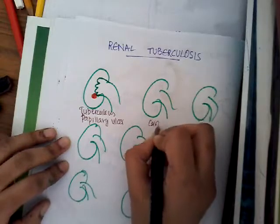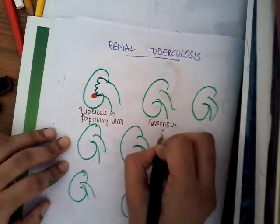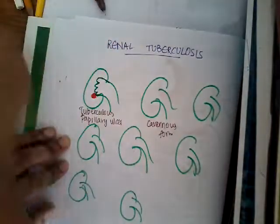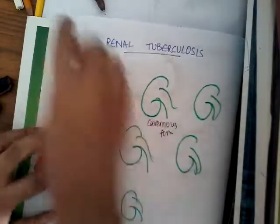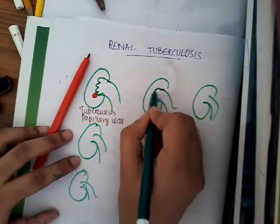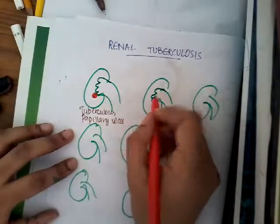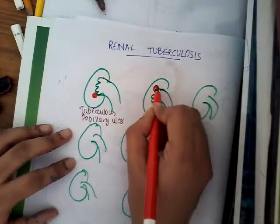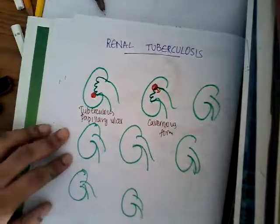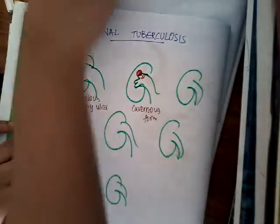The second type is the cavernous form. Here the ulcer which is present tends to burst out into the renal pelvis. That is the cavernous form.